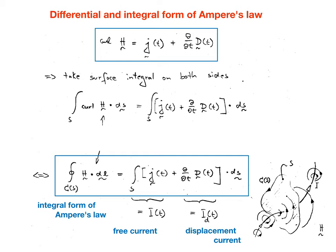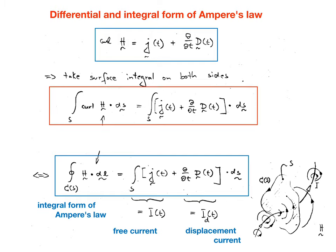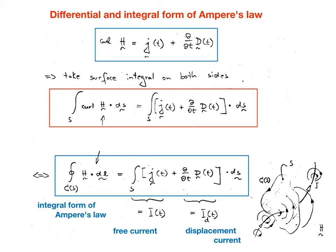The complete Ampere's law reads: curl of magnetic field strength H equals current density J plus the partial differentiation of the electric flux density D with respect to time. This differential form of Ampere's law can be converted into the integral form by taking a surface integral on both sides and applying Stokes' theorem on the left-hand side, converting that surface integral into a closed path integral. The integral form relates the path integral of the magnetic field over a closed contour C to the sum of the free current and the displacement current through the surface limited by that contour.